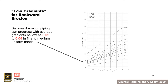When preparing more and less likely factors, do not use qualitative terms like 'low gradient.' Backward erosion piping can progress with average gradients as low as 0.02 to 0.05 in fine to medium uniform sands. Always specify hydraulic head difference over seepage path length, or H over L. Don't just provide the numerical value of gradient. This assists with quality control reviews and helps to clearly communicate seepage path length. Discuss key assumptions and parameters for estimation of critical gradients.